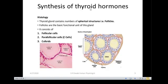The synthesis of thyroid hormones takes place in the follicular cells of the thyroid gland, and they require iodine in their synthesis. The thyroid gland contains a number of spherical structures called follicles, which are the basic functional unit of the gland.